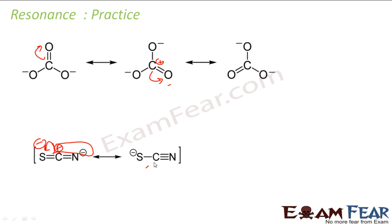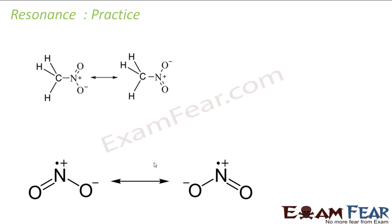So there are two resonating structures for SCN⁻. For NO₂⁻ (nitrite ion), the bond can break, both electrons go to oxygen giving it a negative charge while nitrogen gets a positive charge. The positive and negative combine to form a double bond with the other oxygen. Similarly, doing the same from the other side gives another resonating structure — so there are multiple resonating structures for NO₂⁻.